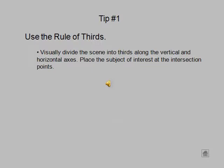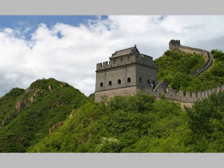Visually divide the scene into thirds along the vertical and horizontal axes. Place the subject of interest at the intersection points. In other words, as you look through your viewfinder, imagine that these blue lines are superimposed on the scene before you.